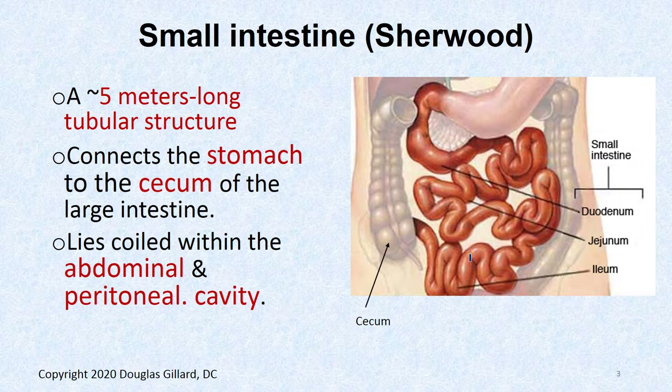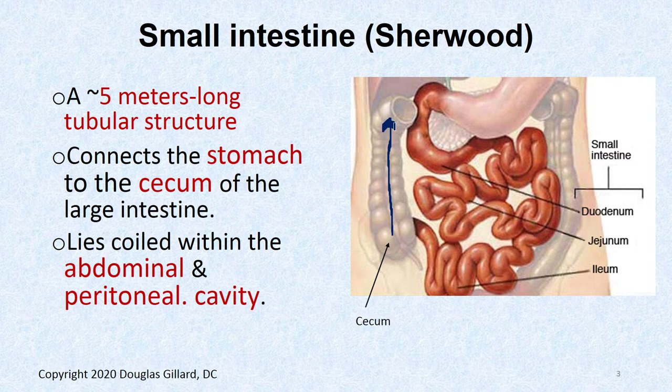The small intestine is kind of the star of the show. We have the duodenum right here — tomato, tomato. There's the stomach we just got finished with. Then we have the jejunum and then the ileum down here. The ileum dumps into the ascending colon. The cecum is down here, there's the appendix right there. The small intestine is about five meters long and connects the stomach to the cecum of the large intestine.